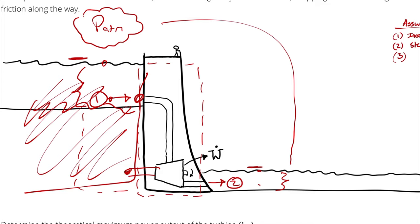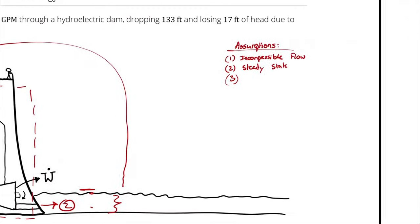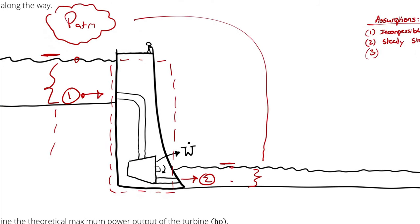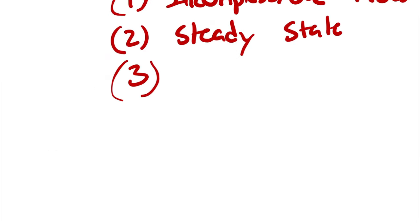So the elevation difference is what's driving the pressure difference. Therefore, the pressure difference doesn't really matter. We're saying P1 is relatively close to P2.